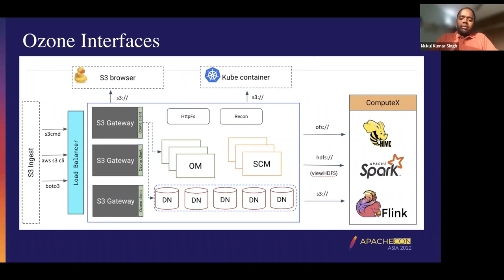In any cluster, the store is not used in isolation. There are always other applications running on top of it — things like Hive, Spark, Flink, Kafka, MapReduce, and Yarn. The most common storage access pattern we have seen is using the OFS protocol, which is basically the Hadoop compatible file system using which users access Ozone.